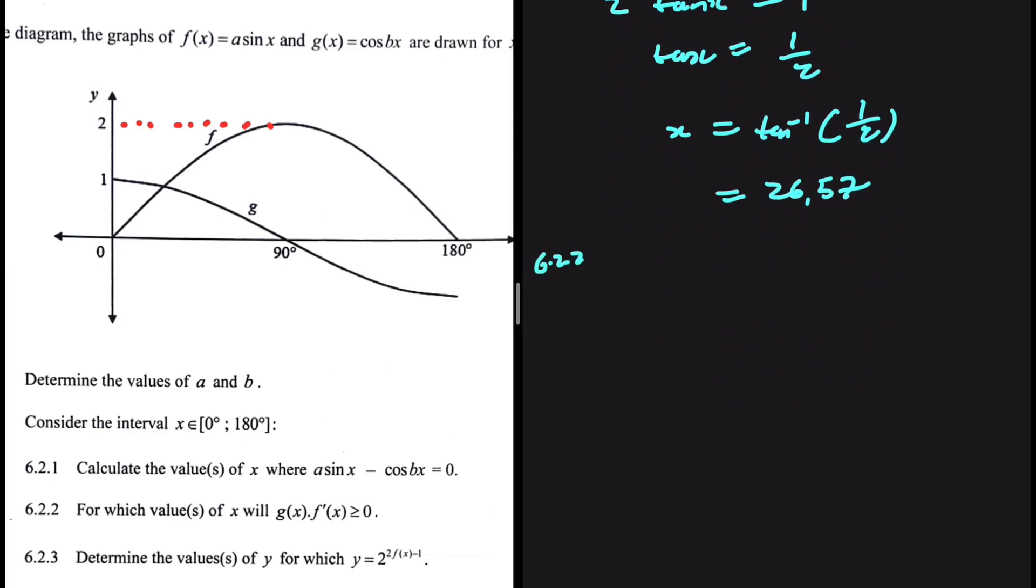6.2.2. For which values of x will g of x multiplied by the gradient of f of x be greater than or equal to 0? Let's go ahead to our sketch and do some constructions.